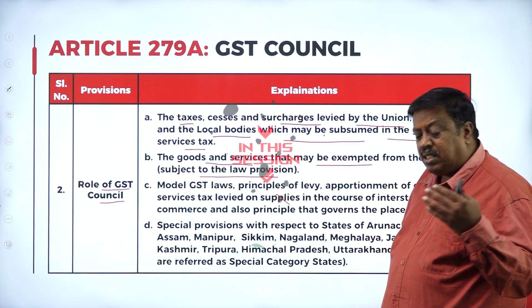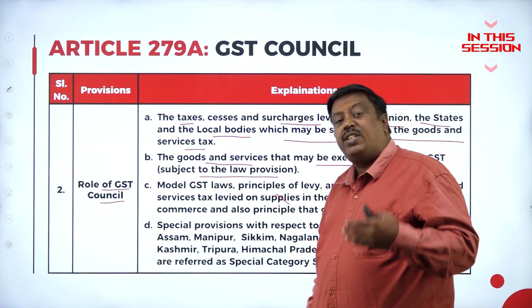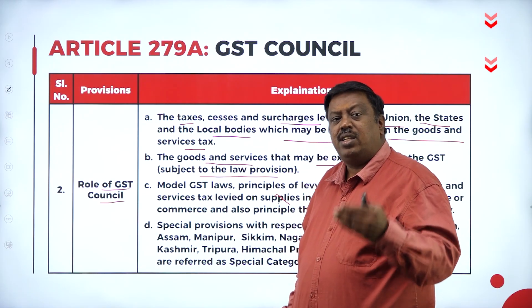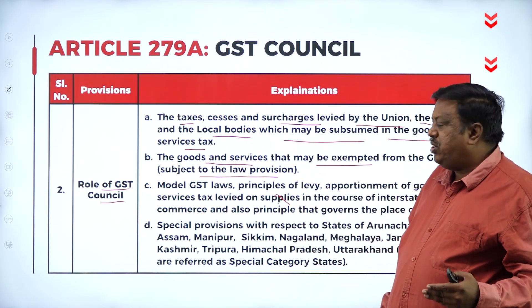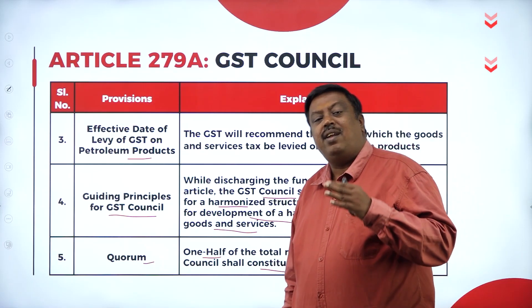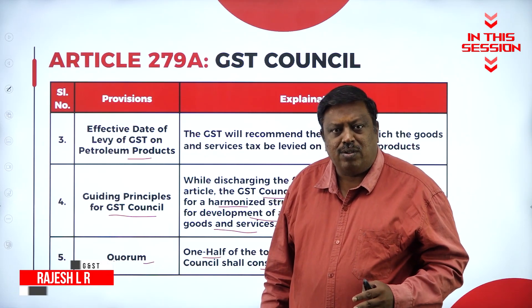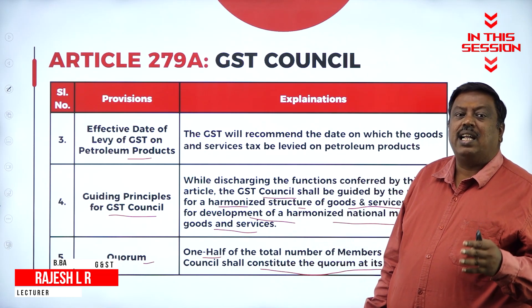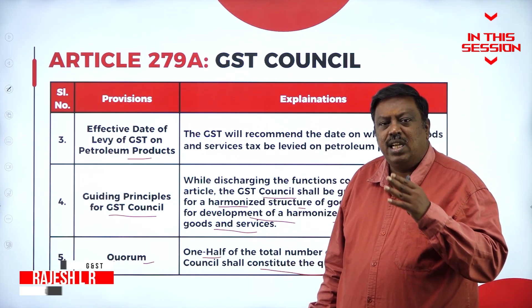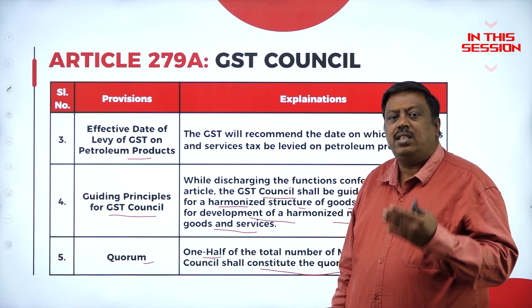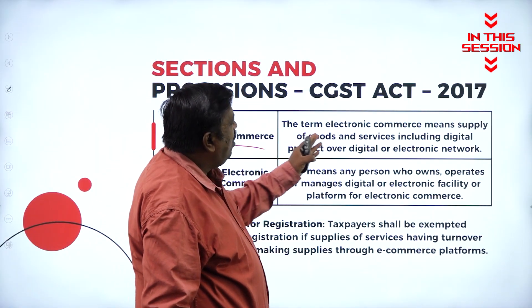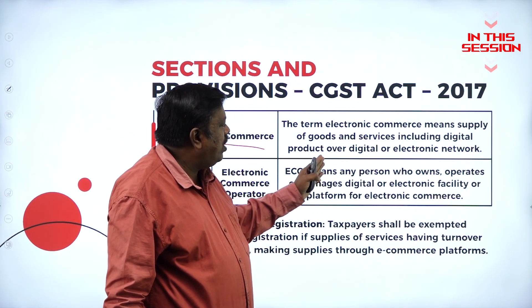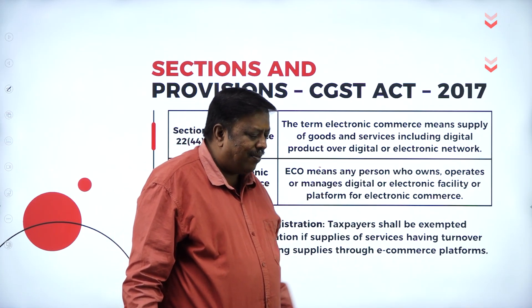Certain goods and services are exempted as per the rules, regulations, laws and provisions of the GST. If there are less than five members in the GST council meeting, they cannot pass any resolution or take major decisions for changes to the GST. The term electronic commerce means supply of goods and services including digital products or digital or electronic networks.